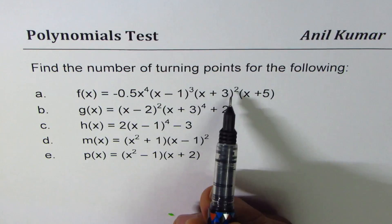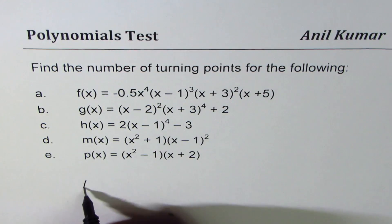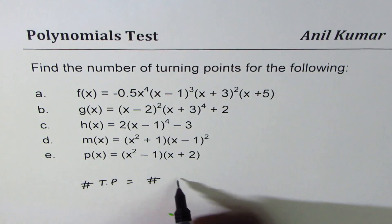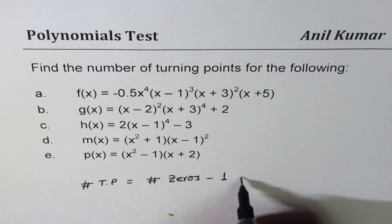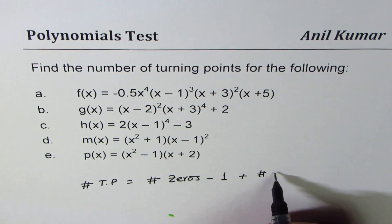Let me give you a formula here. Number of turning points equals number of zeros minus 1 plus number of even zeros.